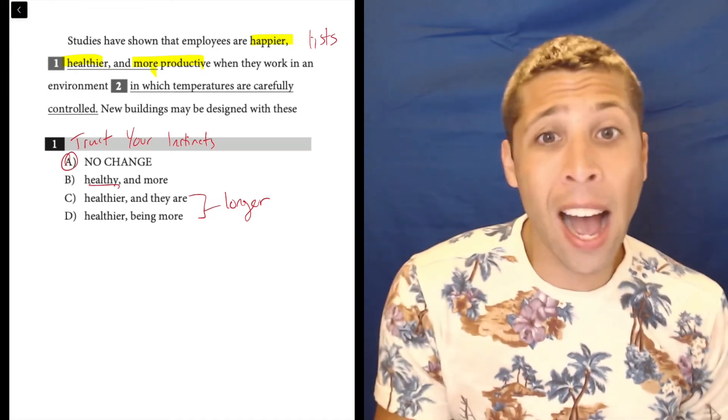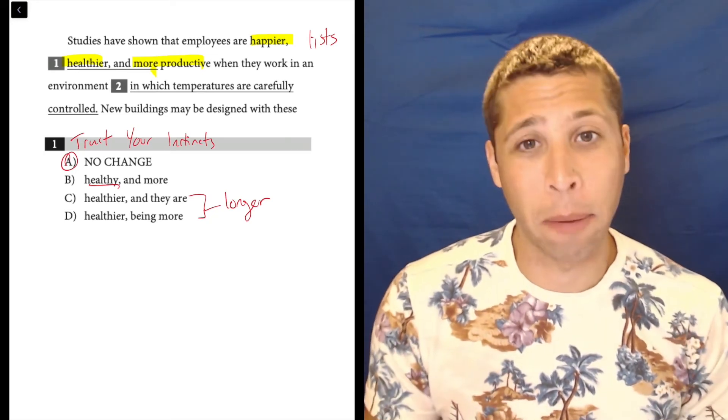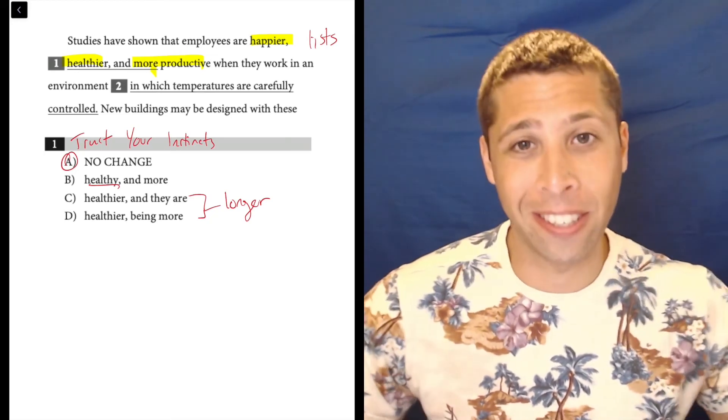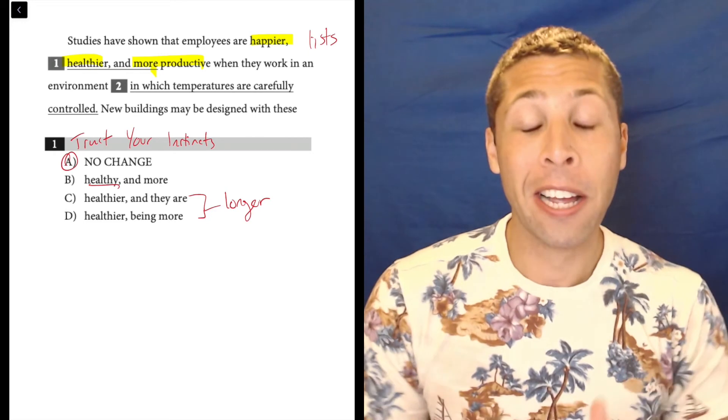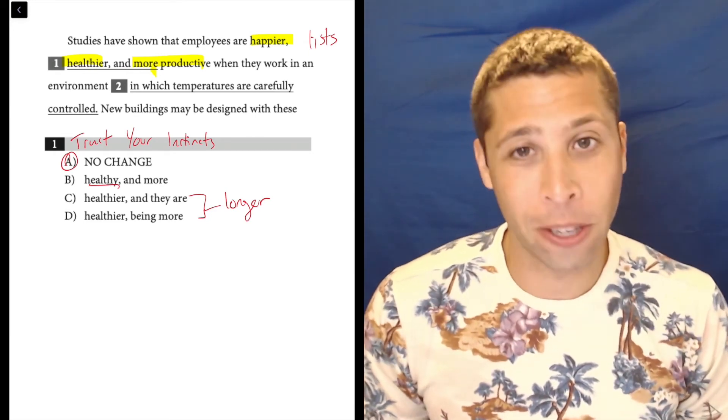So when in doubt, you're also supposed to pick shorter choices, and I think that applies here as well. So all of this is to say there's a lot of rules here, but you probably didn't need any of them to know that choice A was the right answer.